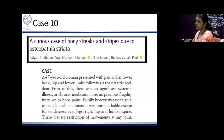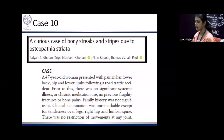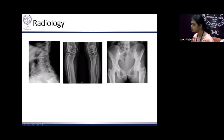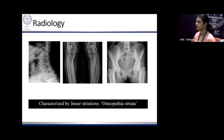A 47-year-old lady presented with pain in her lower back, hip, and lower limbs. Bone biochemistry was normal and clinical examination was unremarkable except for tenderness. X-rays showed striations in the bone in the lumbar vertebrae, bones of the lower limbs, ileal region, and sacrum. This is what we know as osteopathia striata.